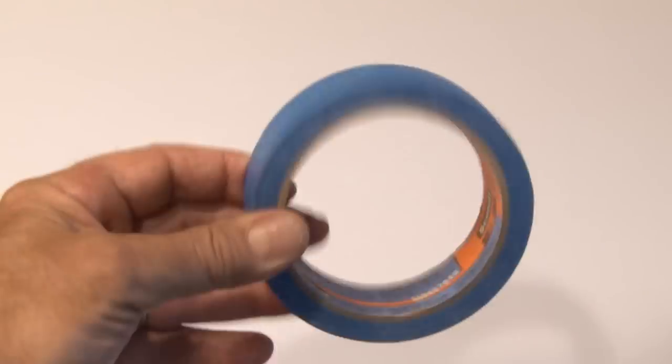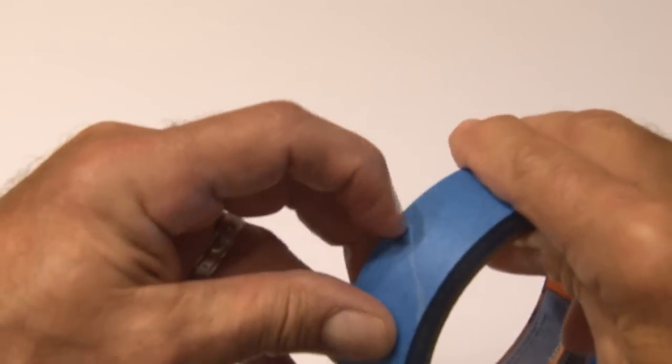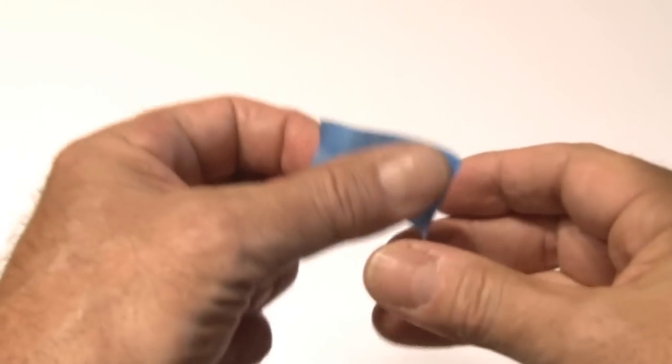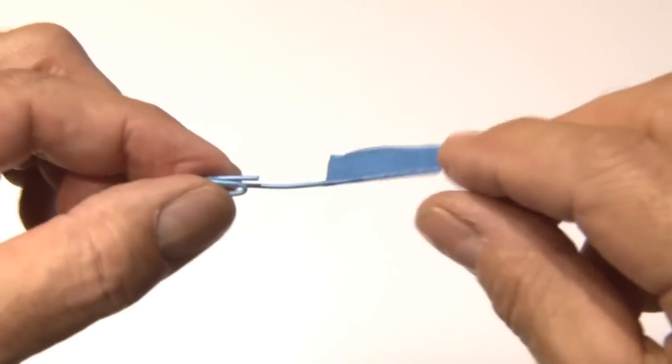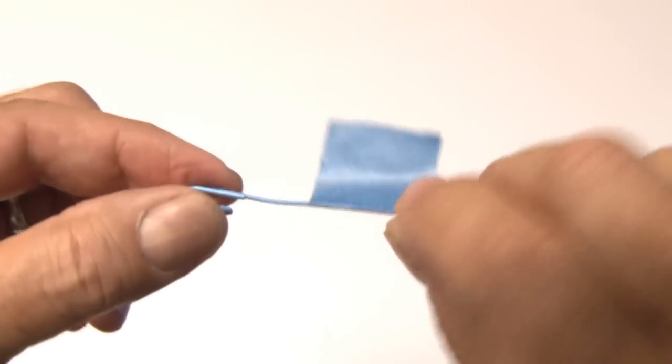Then it's time for some masking tape. I'm using this blue painter's tape, and we'll peel off and cut straight about a two-inch piece. Then the final step is to fold that little piece over the very end of our paperclip. It'll kind of look like a flag.